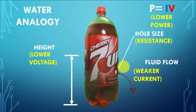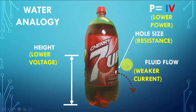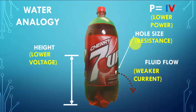Hopefully, this analogy gives you the relationship of voltage, current, resistance, and power. Notice the lower the voltage, the weaker the current, if you keep the resistance the same — in this case, the hole size the same. And that's what is described as Ohm's law, where the voltage and current relationships are directly proportional.